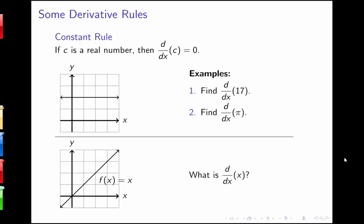We have a rule for the derivative of a constant, and we want to see why this rule is true. The rule says that the derivative d/dx of c is equal to 0. If we think about what we know about derivatives — that the derivative represents slope — if I have the function y equals c, it's a horizontal line at c, and a horizontal line has slope 0, so this makes sense as the derivative of a constant function.